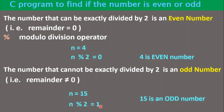In other words, if you get 0 as the remainder, the number is even. If you do not get 0 as the remainder, then the number is an odd number.